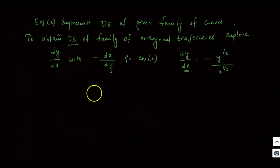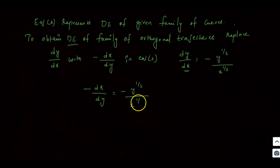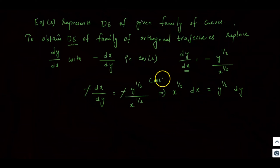Cross multiplying, we get x^(1/3)·dx = y^(1/3)·dy. This is the variable separable form of the orthogonal trajectory equation.